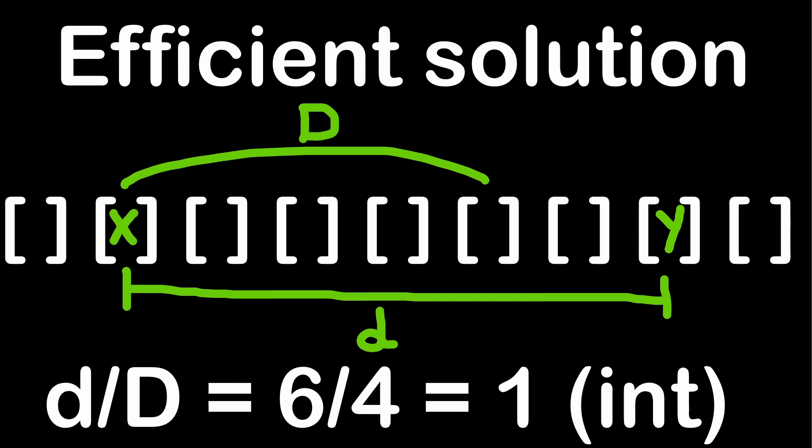And this can be tested by multiplying the calculated number of jumps by the capital D, the distance covered by one jump, and checking if this distance starting from x will exceed the distance y. If not, we have to add our additional jump.